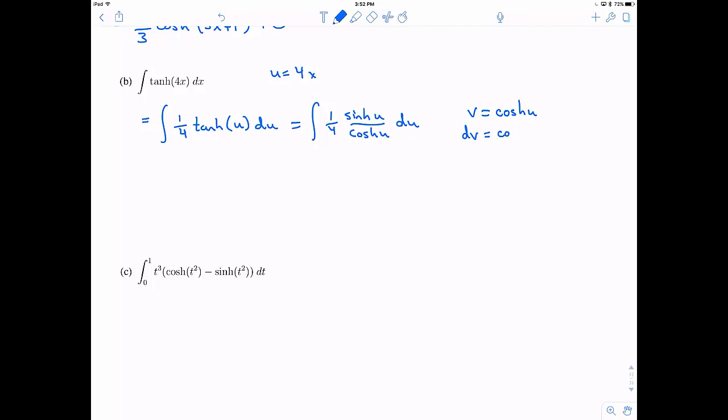So v is going to be hyperbolic cosine with the idea that when I take the derivative of it, I get hyperbolic sine of u du. And I can see that I can trade this in here for one of my dv's. So that's a good sign.